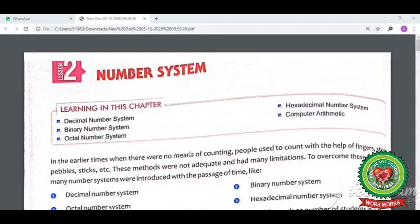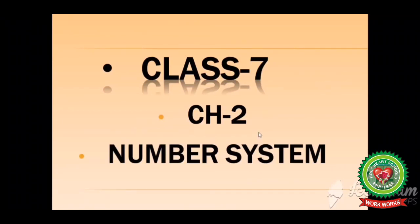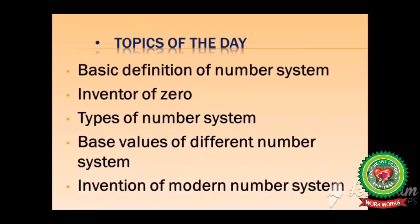Good morning students, today we are going to start lesson number two: number system. The objectives of this chapter are decimal number system, binary number system, octal number system, hexadecimal number system, and computer arithmetic. Today we are going to cover page number 20 and the topics of the page are basic definitions of number system, inventor of zero, types of number system, base values of different number system, and invention of modern number system.